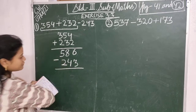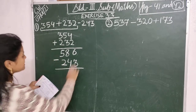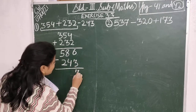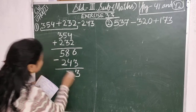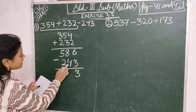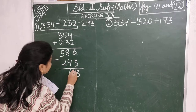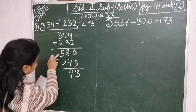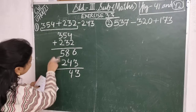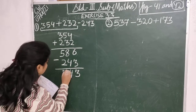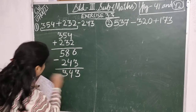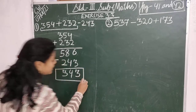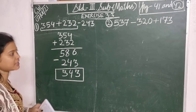Let's start the subtraction. 6 minus 3 is 3, so I will write here 3. Then 8 minus 4 is 4, so I will write here 4. Then here 5 and 2: 5 minus 2 is 3, so I will write here 3. So your answer is 343.